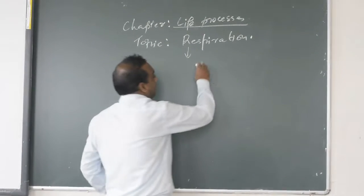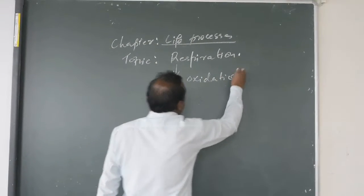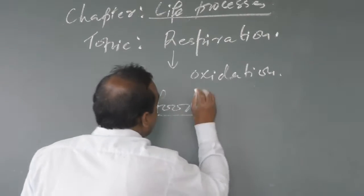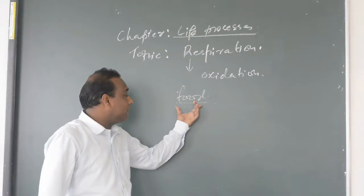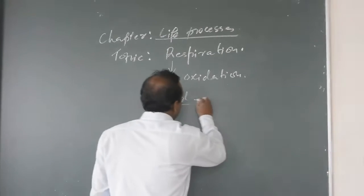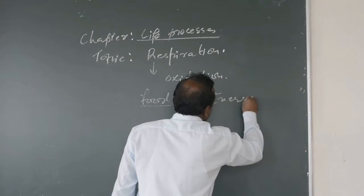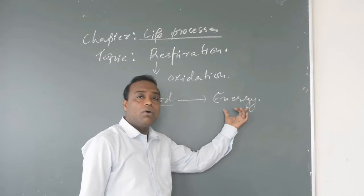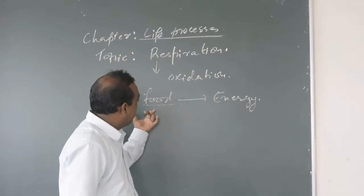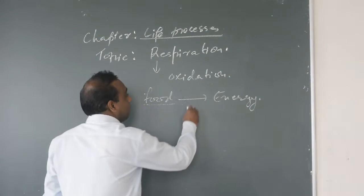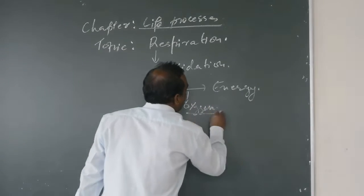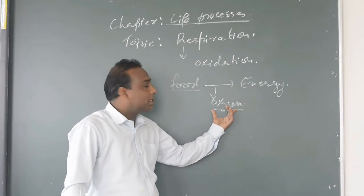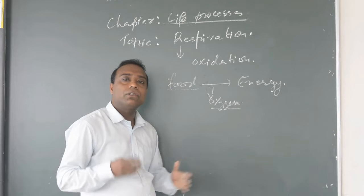Respiration is the process of oxidation. Organisms need energy and they get energy from food. The food is digested and generally the energy is produced. The production of energy depends upon oxygen. All living organisms need oxygen for the breathing process, and with the help of breathing, they take oxygen inside their body, and after that the oxygen enters our cells.